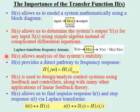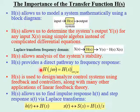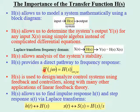We'll see how to do that in later videos in this chapter. H of S provides a direct pathway to the frequency response. All we have to do to get the frequency response H of J omega is start with the transfer function H of S and let S equal J omega, and that gives us the frequency response. H of S is also used to design and analyze control systems using feedback and controllers, along with many other applications of linear feedback theory.